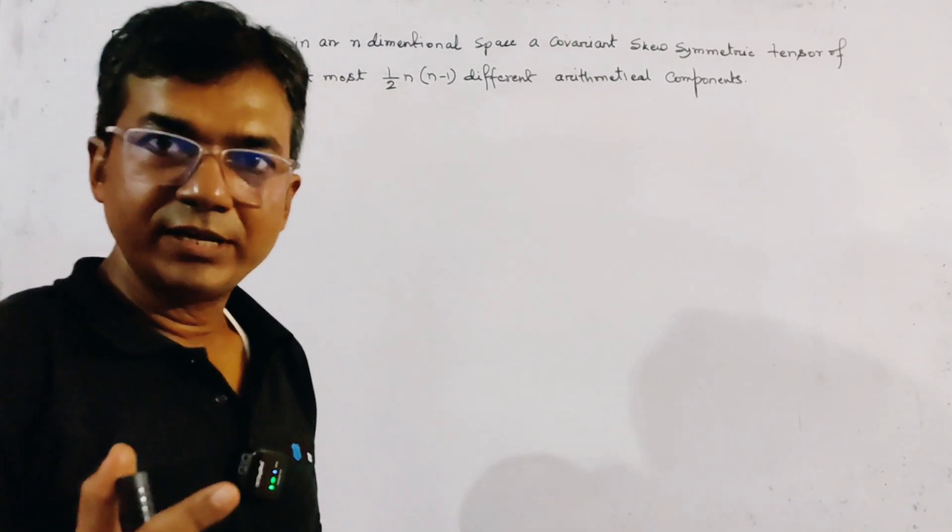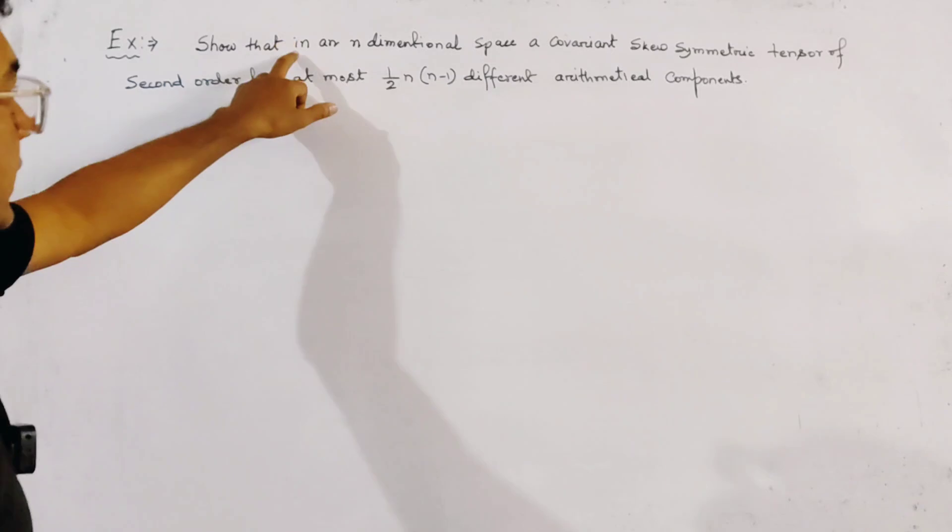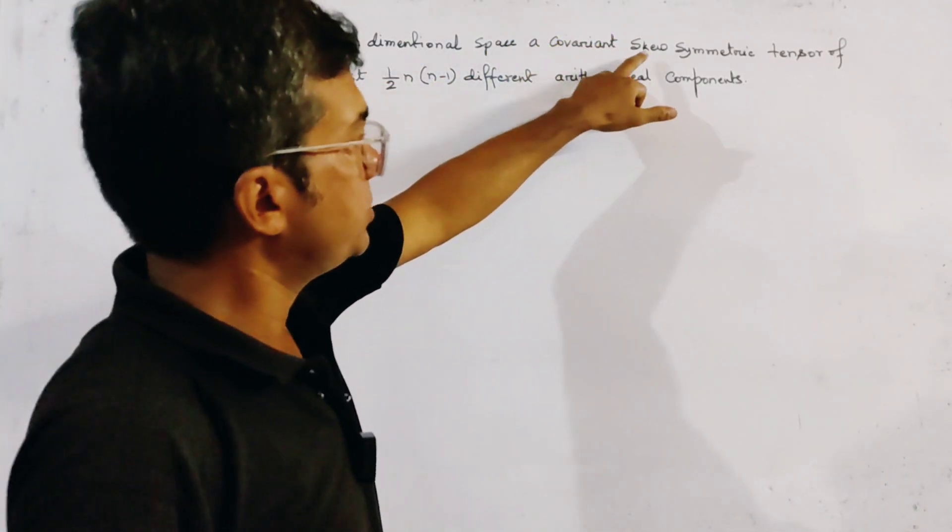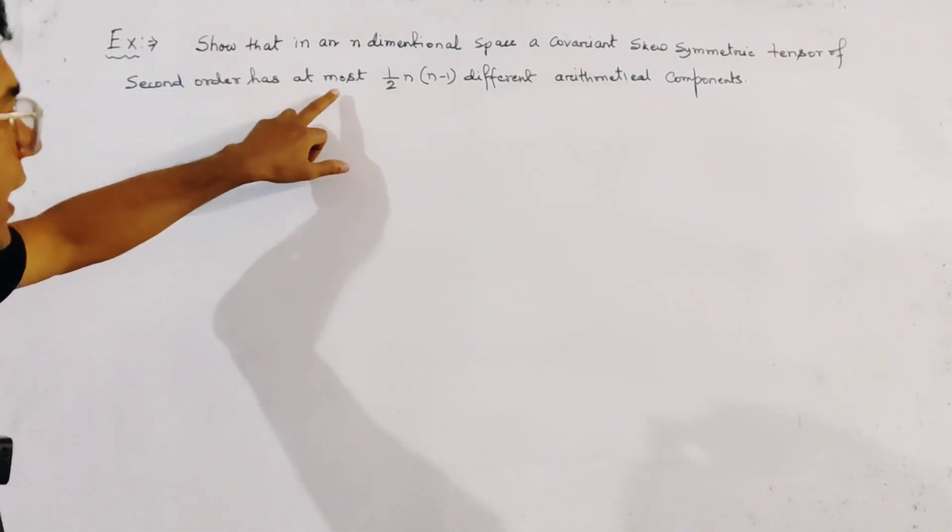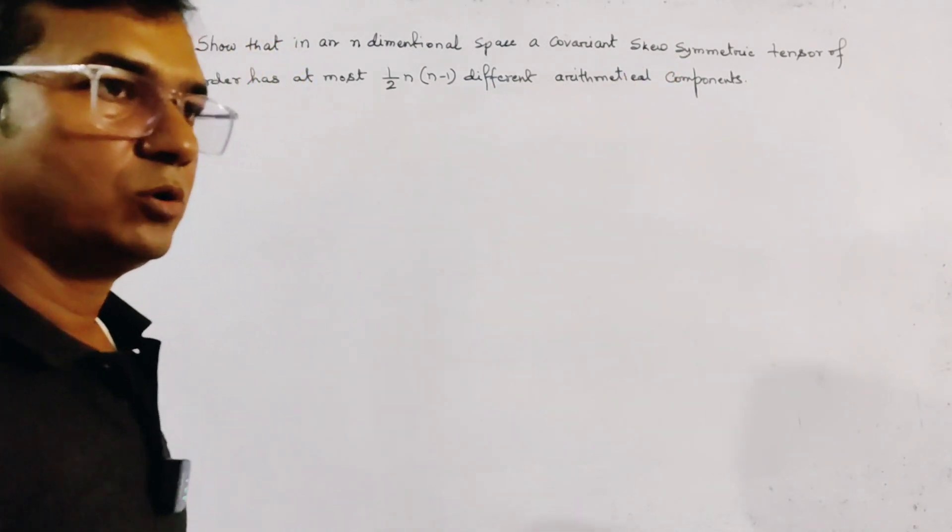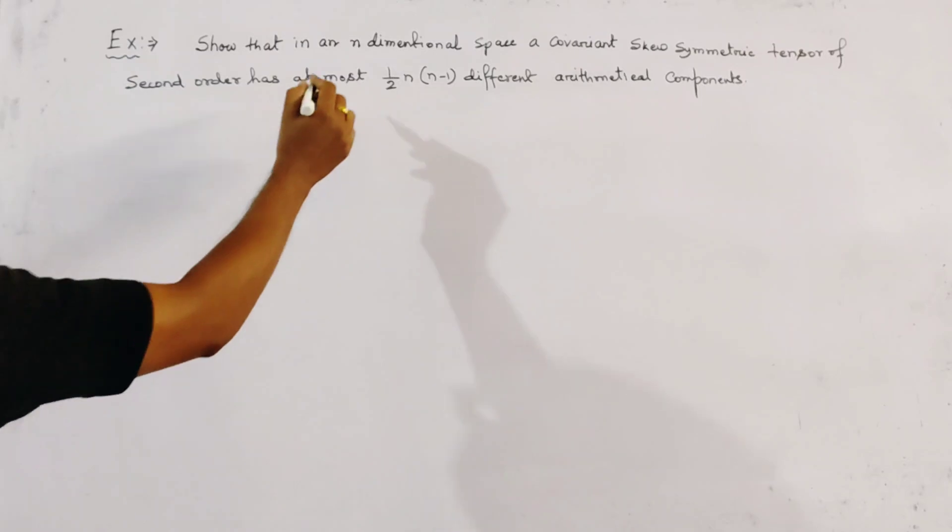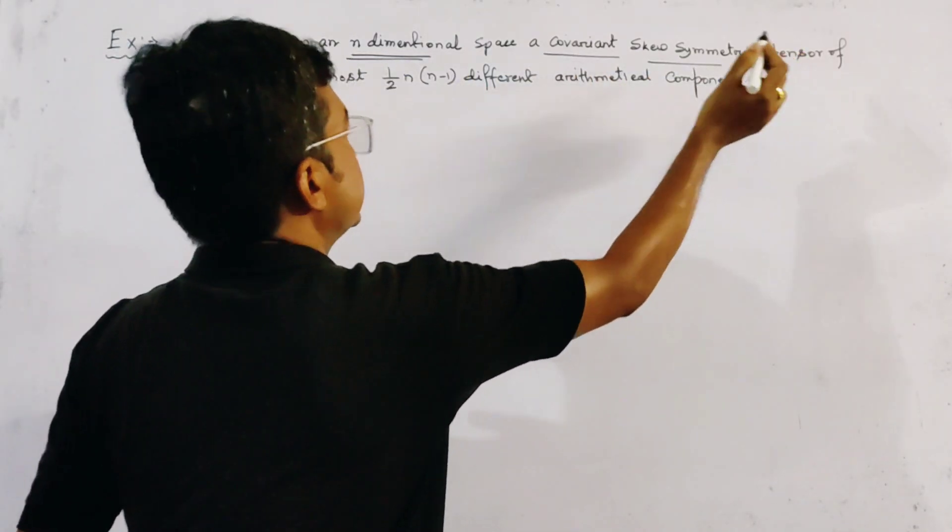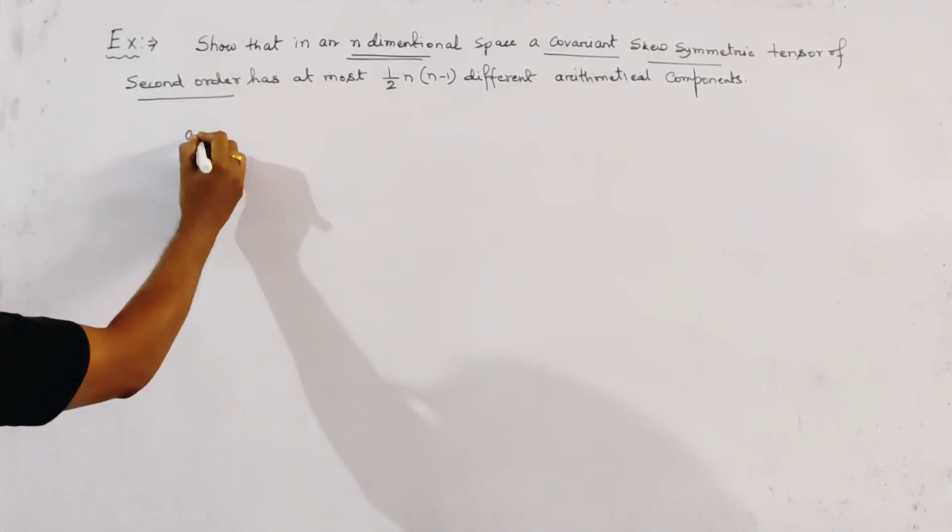A problem of tensor algebra is as follows: in an n-dimensional space, the covariant skew-symmetric tensor of second order has at most half into n into n minus 1 different arithmetical components. We first let here in n-dimensional space a covariant symmetric tensor of second order which is a_ij.